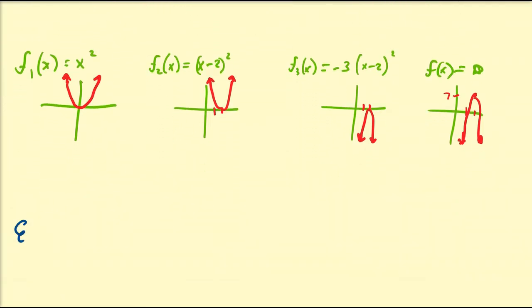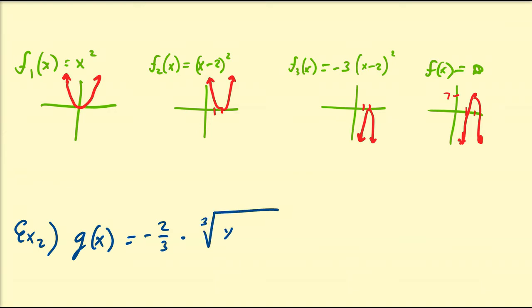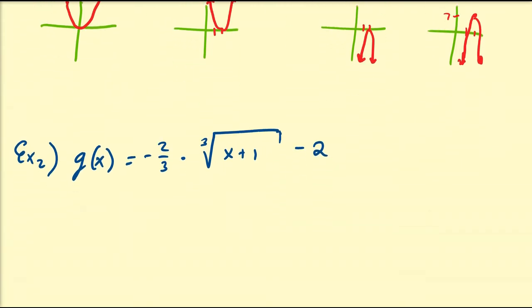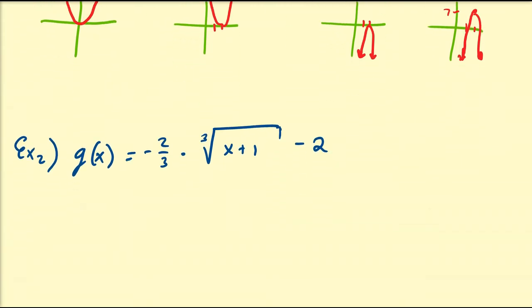Let's look at another example. Suppose we want to find g(x) = -2/3 · ∛(x+1) - 2, where the minus 2 is outside of the cube root symbol. What is the primary function being transformed here? That's definitely the first thing you need to identify. The parent function is going to be g1(x) = ∛x, or x to the 1/3.